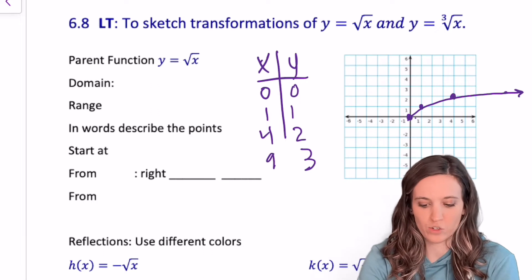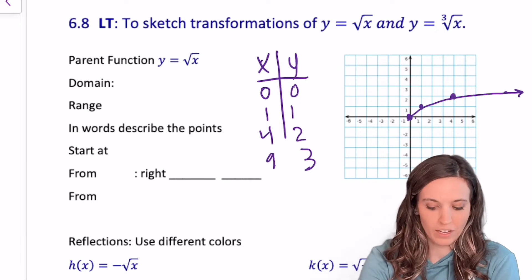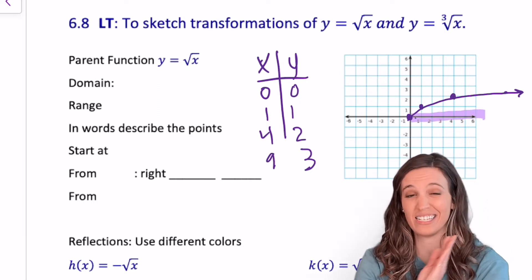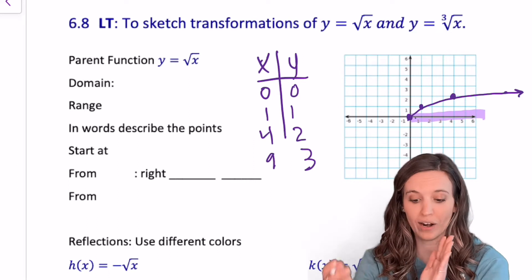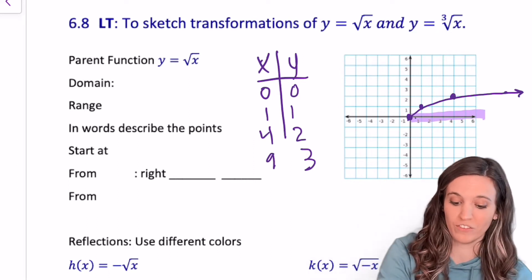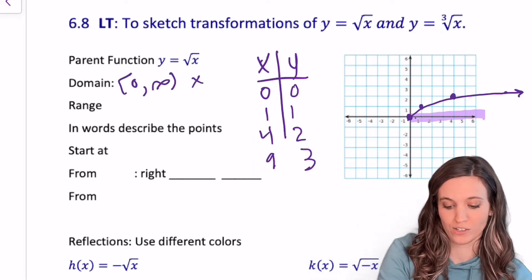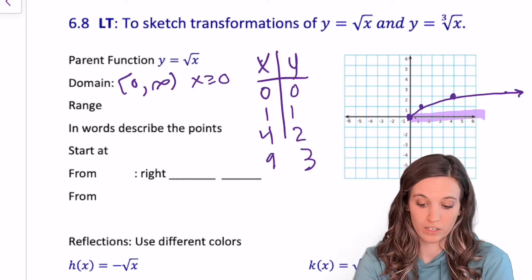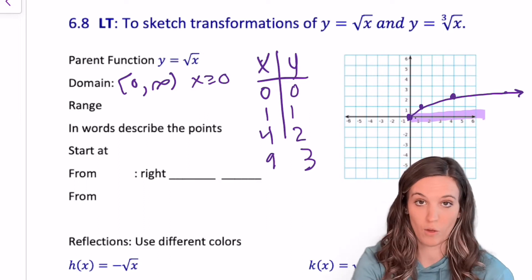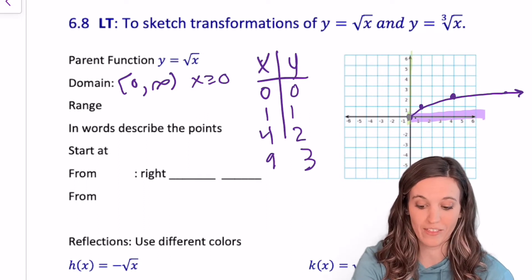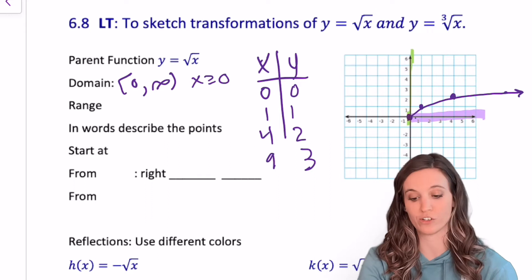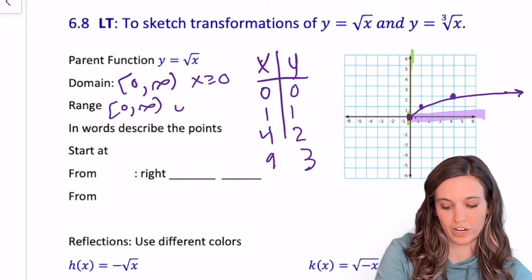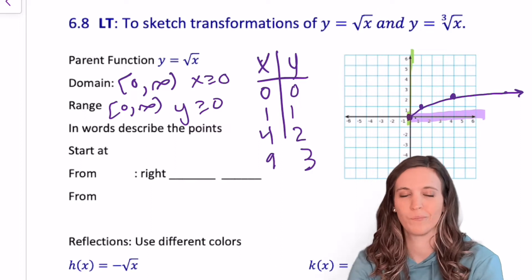What's the domain of this graph? Walking across the x-axis, I start to see it at 0 and then everywhere after that, so the domain is 0 inclusive to infinity, or x is greater than or equal to 0. For the range, I don't see it on the y-axis until 0, and then everywhere after, so the range is also 0 inclusive to infinity.